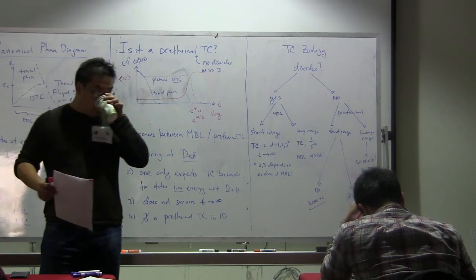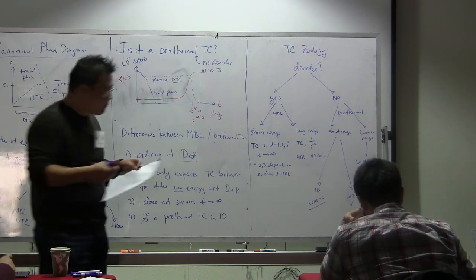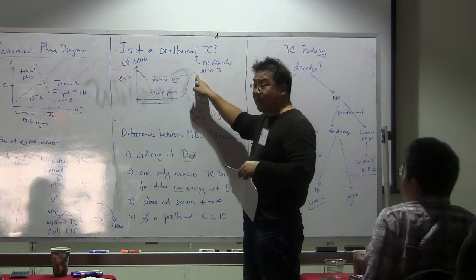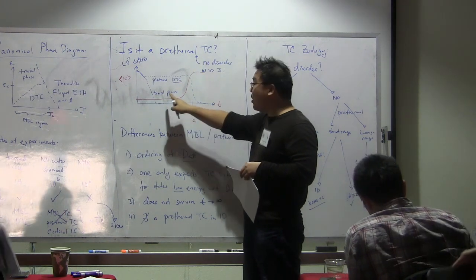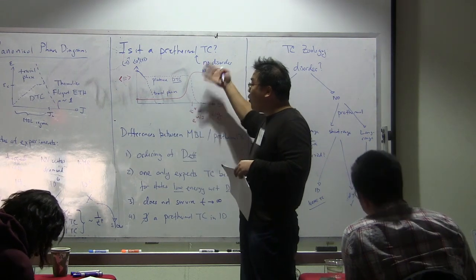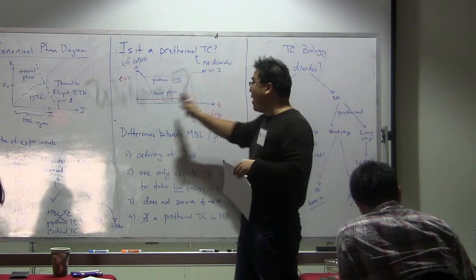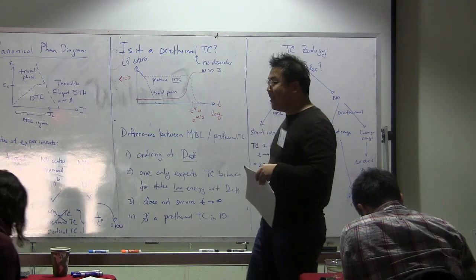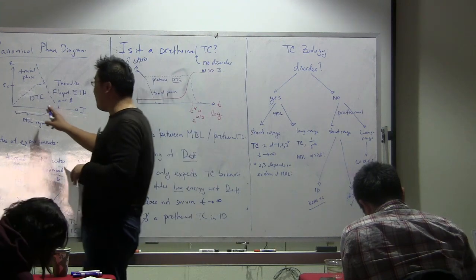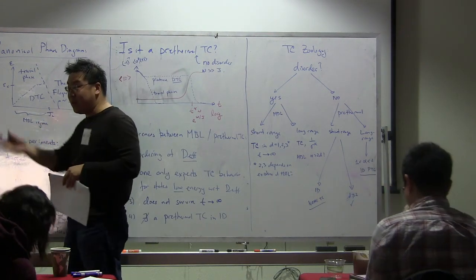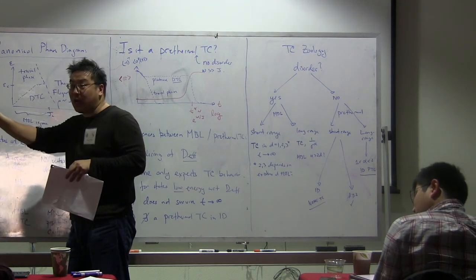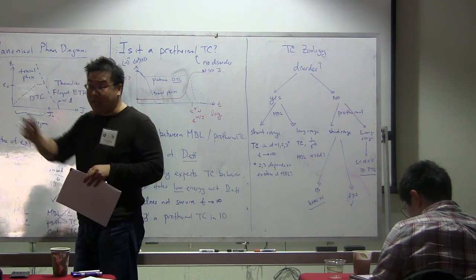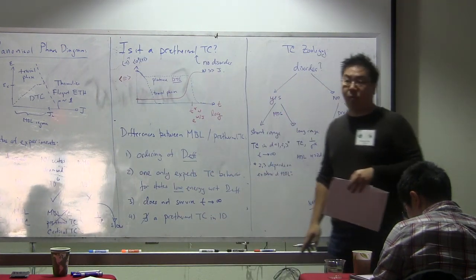Post-lecture question about frequency dependence: the dependence on frequency is really related to the stability of the phase and when things heat. Before the energy density of the system heats from the Floquet drive, that's when we can see the physics. In the MBL region, you still need to be in a regime where the frequency is large enough that you are in the MBL Floquet regime — at low frequency it's harder to be many-body localized, but at high frequency you can be.